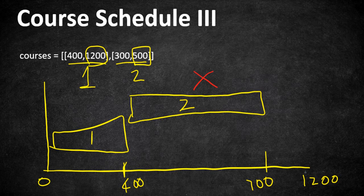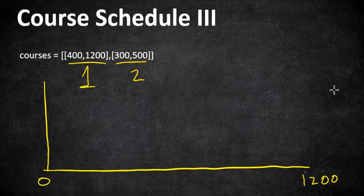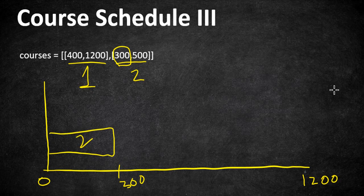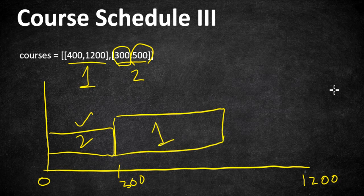Now consider taking course 2 first and then course 1. Starting course 2 from day 0, with duration 300, we finish on day 300. Its deadline is 500, so this is satisfied. Then starting course 1 on day 300, with duration 400, we finish on day 700. Its deadline is 1200, which is also satisfied. So within 700 days we can complete both courses.